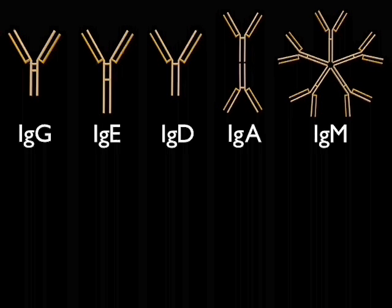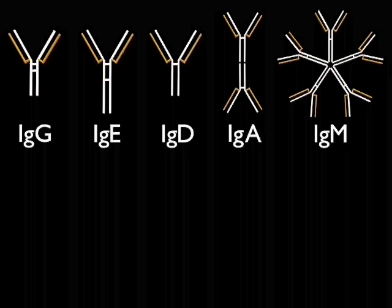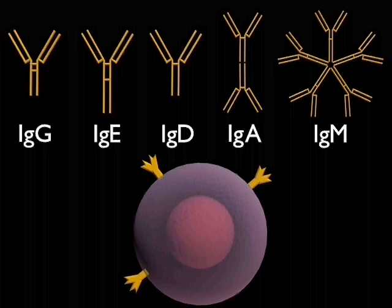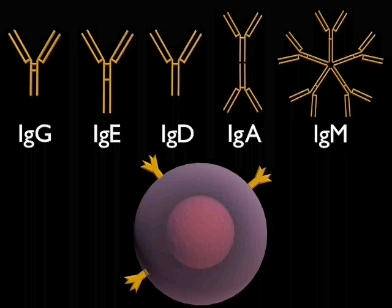The class of an antibody is determined by its heavy chains, and each antibody can be produced either as a cell surface antigen receptor on B cells or as a secreted molecule.